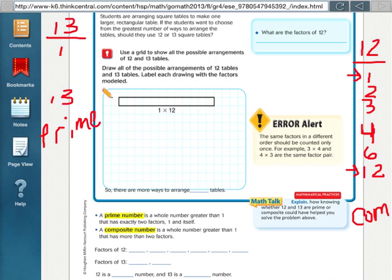So they give us a word problem here. It says students are arranging square tables to make one larger rectangular table. If the students want to choose from the greatest number of ways to arrange the tables, should they choose 12 or 13 square tables? So what you would be doing is seeing which one has the most factors. Now we've already listed out the factors for 12 and 13, so we can obviously see that 12 has many more factors.